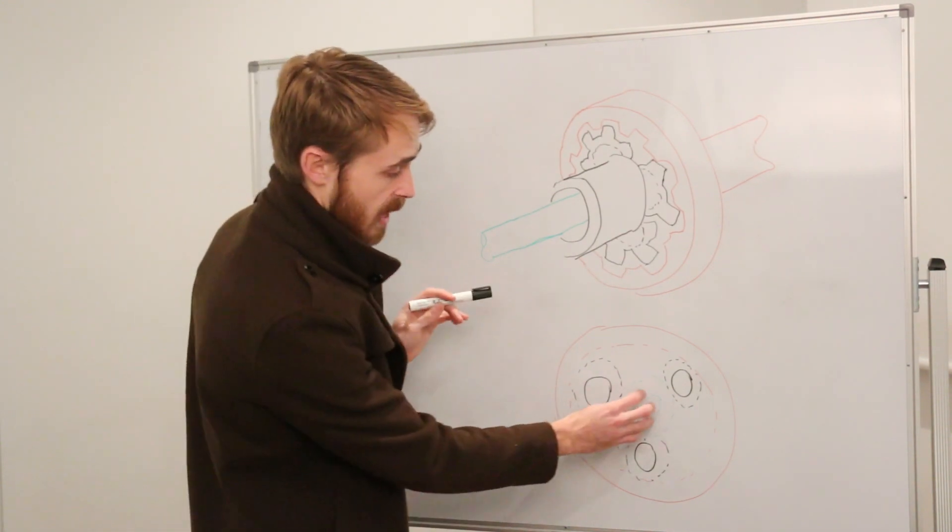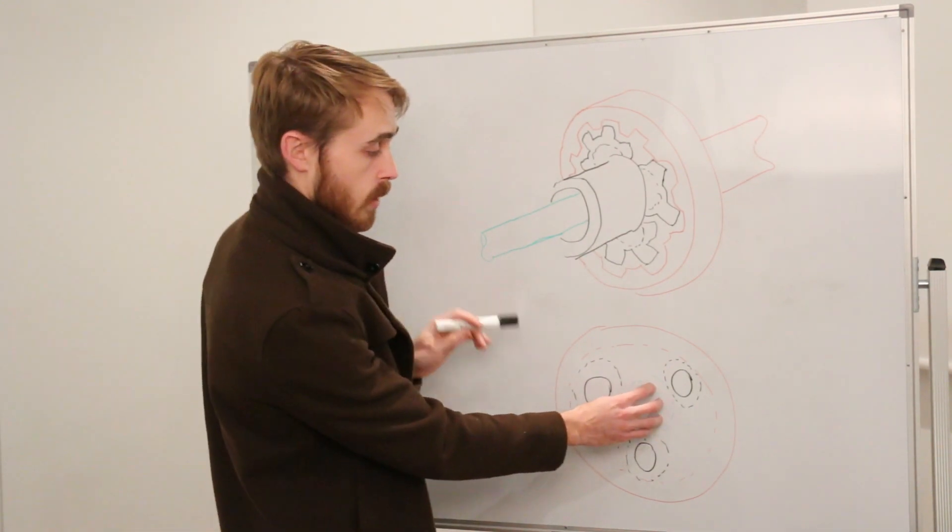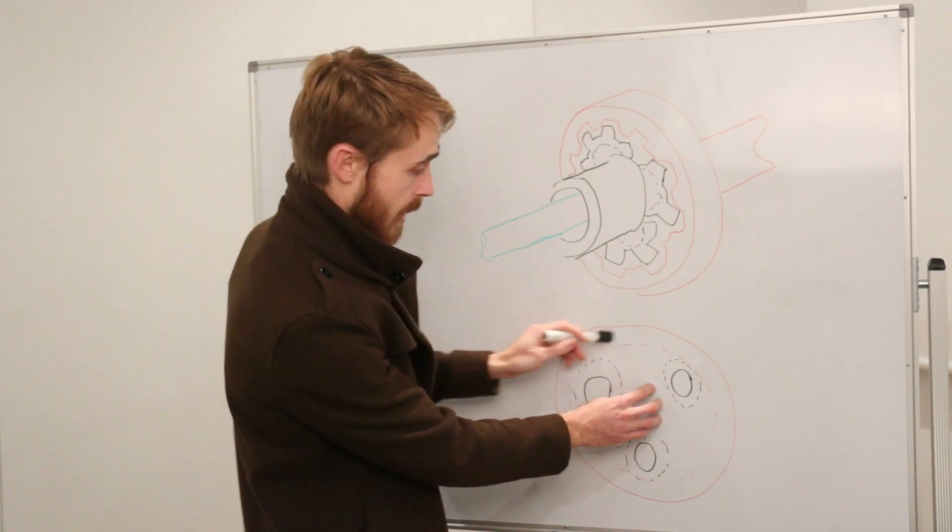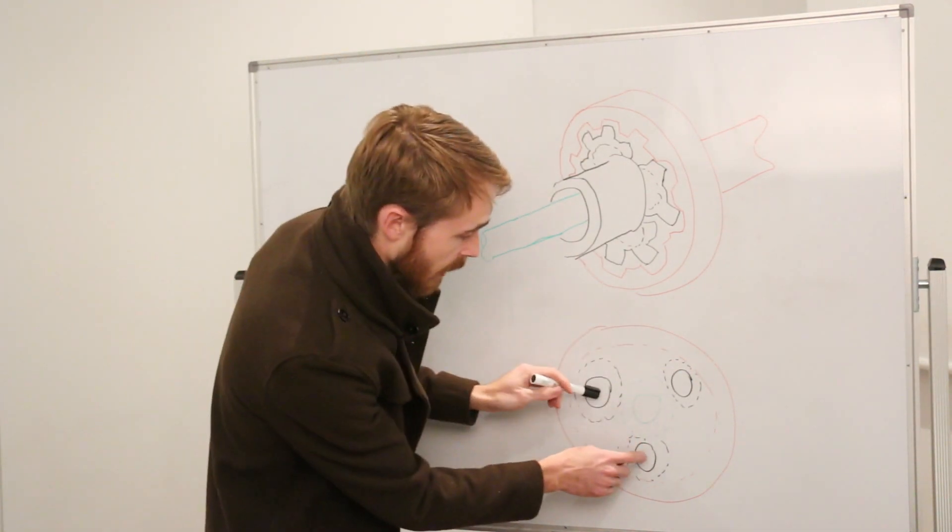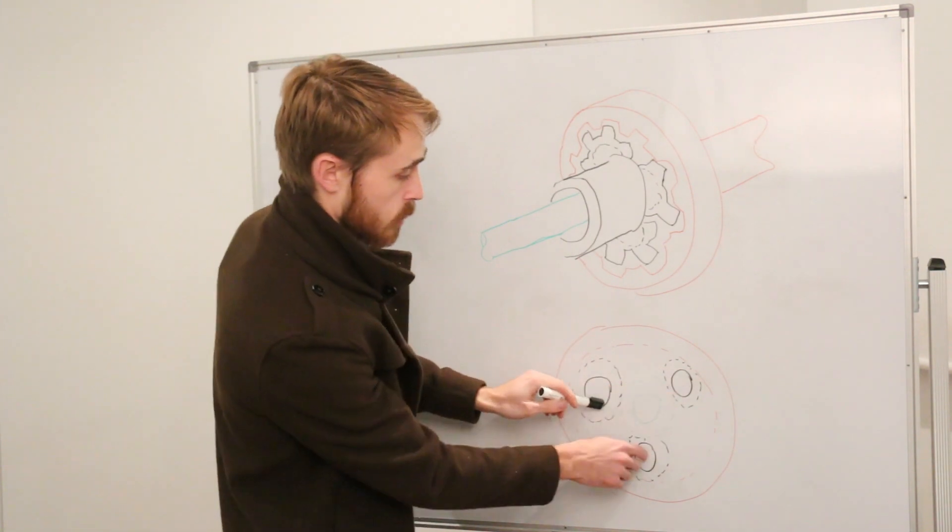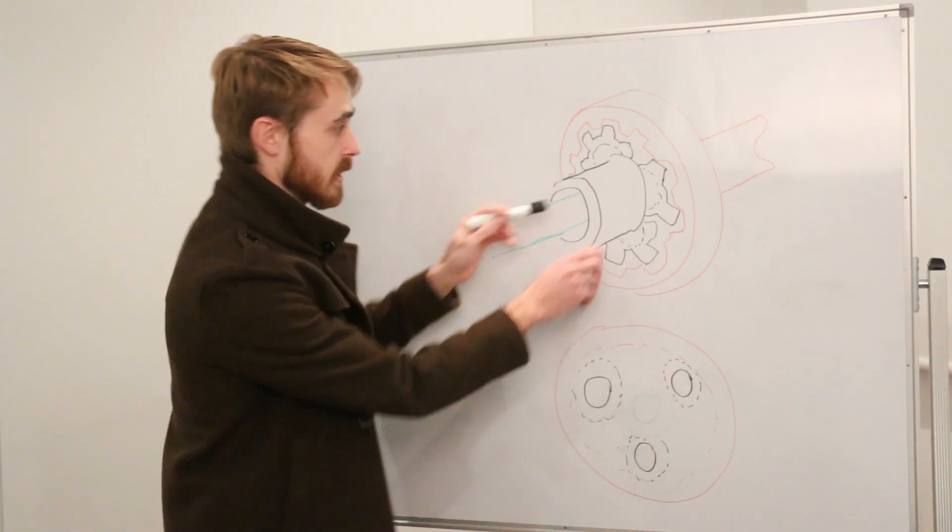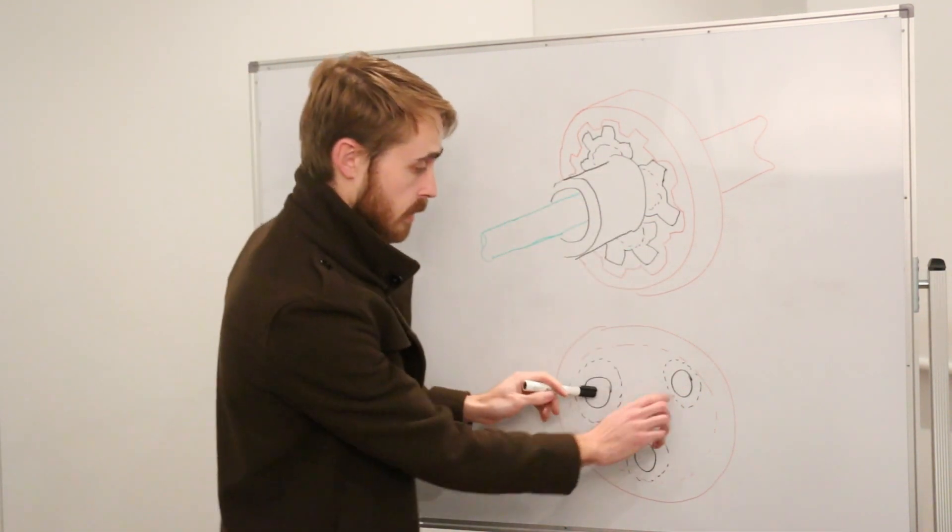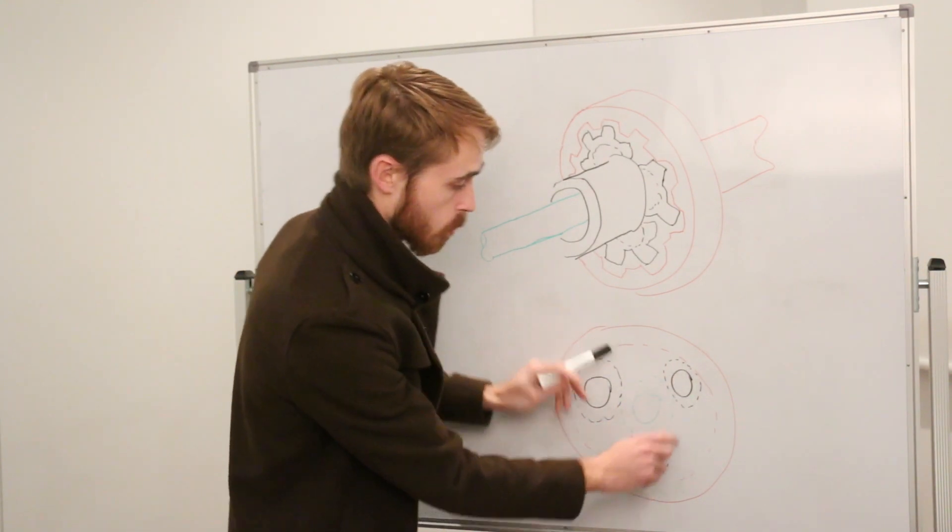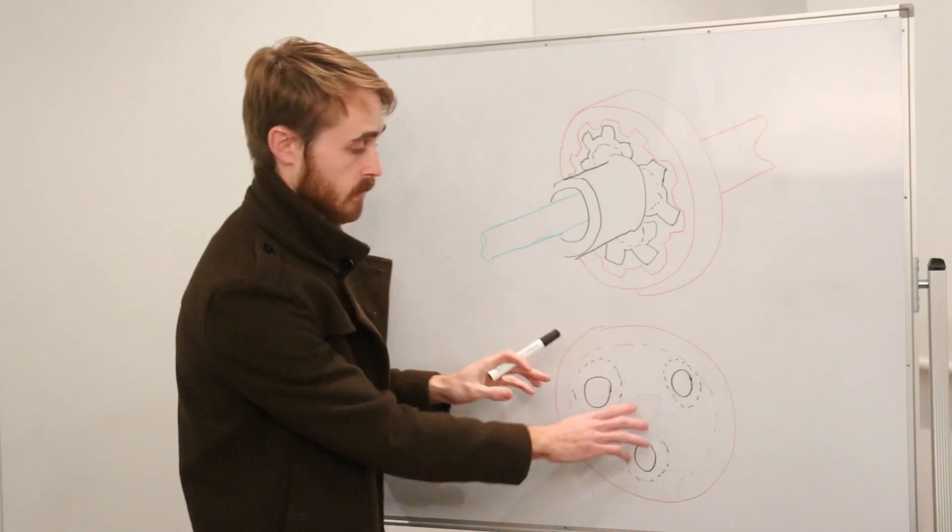Now if you can imagine, if I hold this green one constant and then spin this red ring gear, if I have a shaft connected so that it's holding the carriers for these planets, these planets will move at a slower rate than the ring gear with this current gearing.